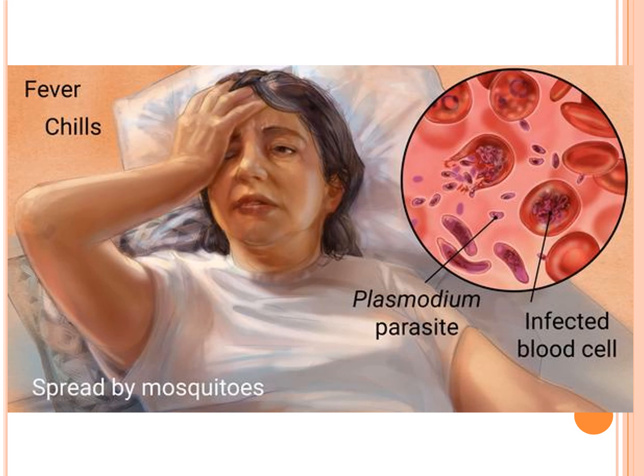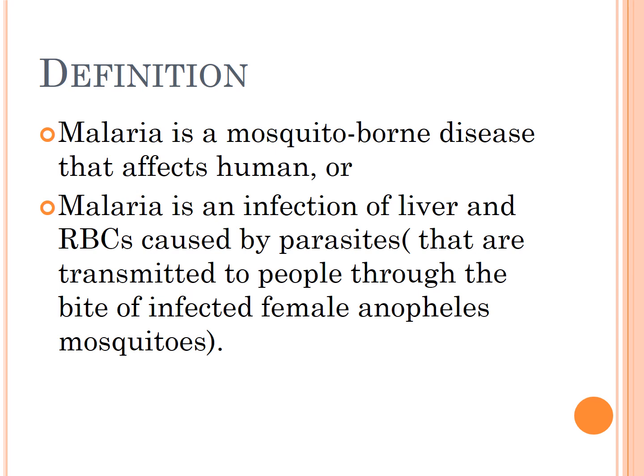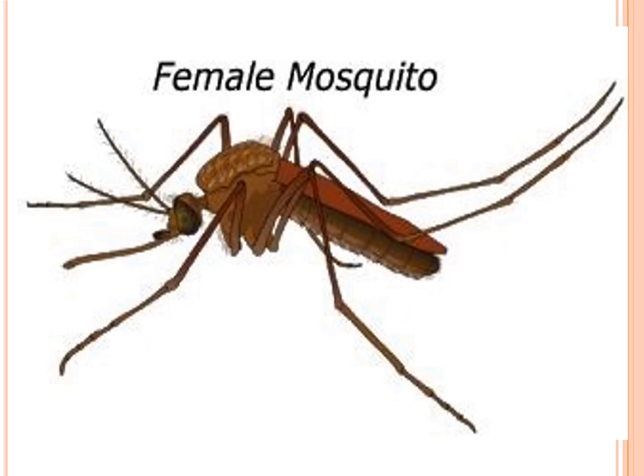Malaria is a mosquito-borne disease that affects humans. It is an infection of the liver, caused by parasites that are transmitted to people through the bite of an infected female Anopheles mosquito.